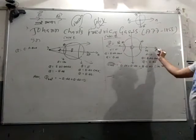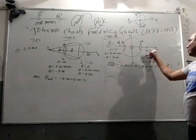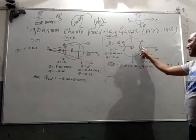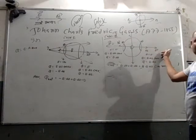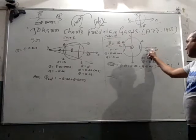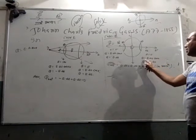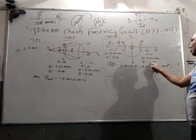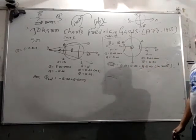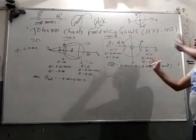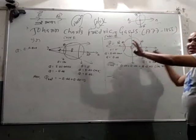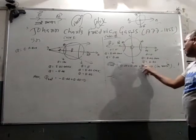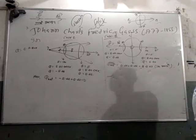On the right side also, the field and surface area are in the same direction. The surface area is always the outward normal, and the field is also outward. So theta will be 0 and flux equals E·dS. Total net flux will be E·dS plus E·dS, which equals 2·E·dS.